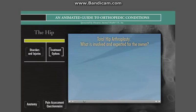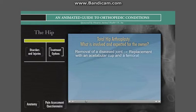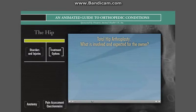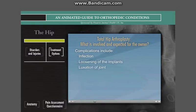Total hip arthroplasty involves removal of a diseased joint and replacement with a two-component prosthetic: an acetabular cup and femoral stem. The procedure produces the best results in adult dogs that fail to respond to medical management. Prognosis is excellent, with approximately 95% of dogs having no complications and a good-to-excellent long-term outcome. Complications rarely occur but include infection, loosening of the implants, and luxation of the femoral component from the acetabular cup. Additional surgery is required to treat these complications.